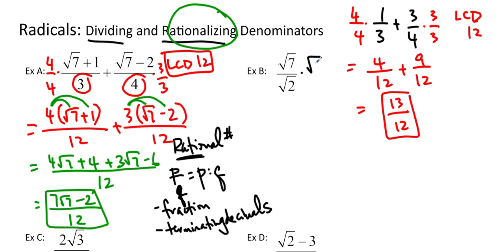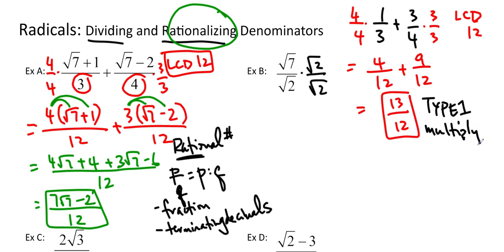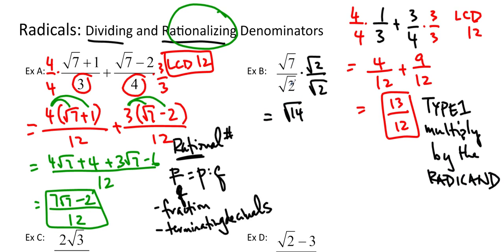Just like before, we can't just multiply by 4 — we had to do 4 over 4. So here we have to do root 2 over root 2. So this is Type 1: multiply by the radicand. Now if I do root 7 times root 2, that gives us root 14. And root 2 times root 2 is going to be 2. We're not going to be able to simplify that because this is on the inside and this is on the outside. So we are done — that's our solution.